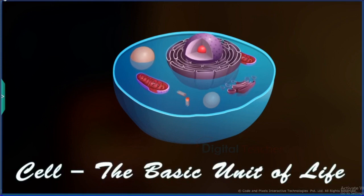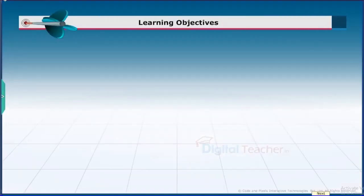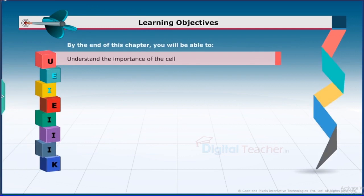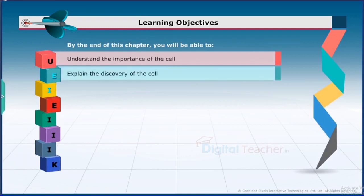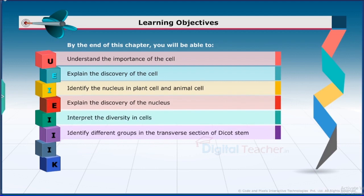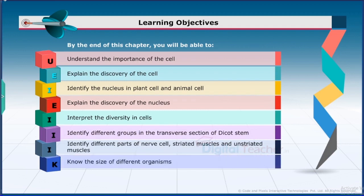Welcome to the chapter 'Cell: The Basic Unit of Life.' This slide presents the overview of the chapter. By the end of this chapter, you will be able to understand the importance of the cell, explain the discovery of the cell, identify the nucleus in plant and animal cells, interpret the diversity in cells, identify different groups in the transverse section of a dicot stem, and identify different parts of nerve cells, striated muscles, and unstriated muscles.